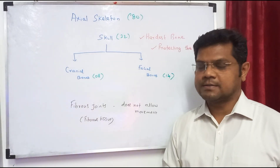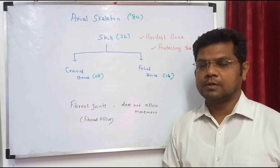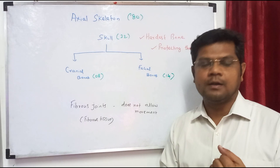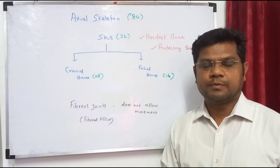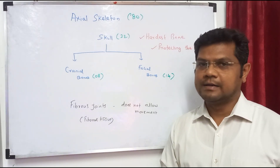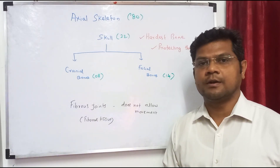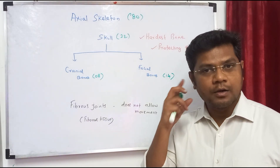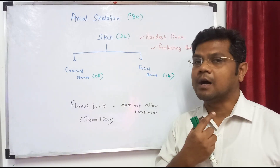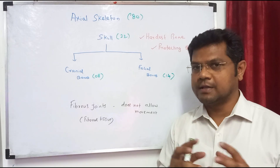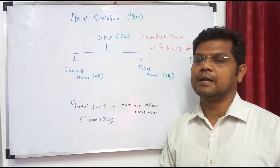The axial skeleton includes the skull, vertebral column, ribs, sternum, ear ossicles, and hyoid bones. These are all parts of the axial skeleton.